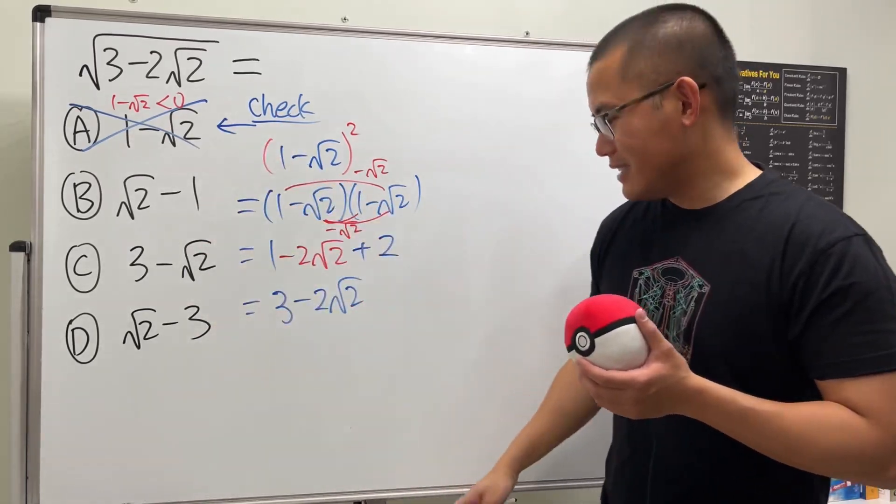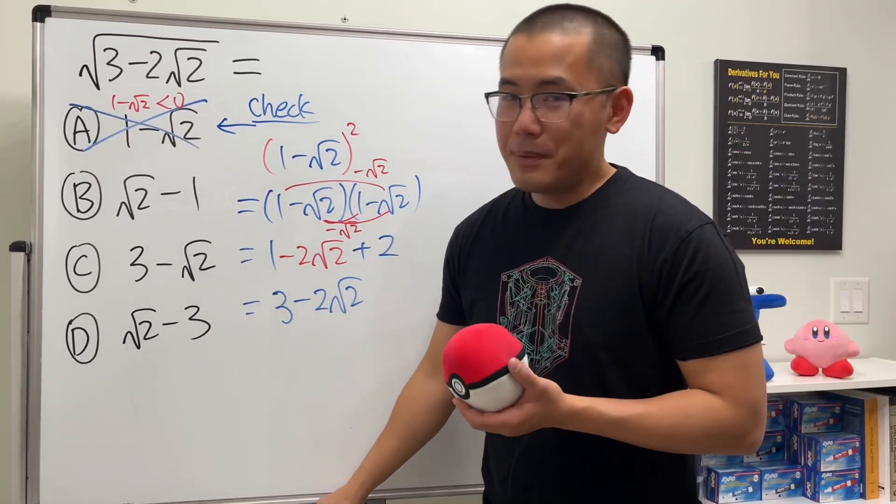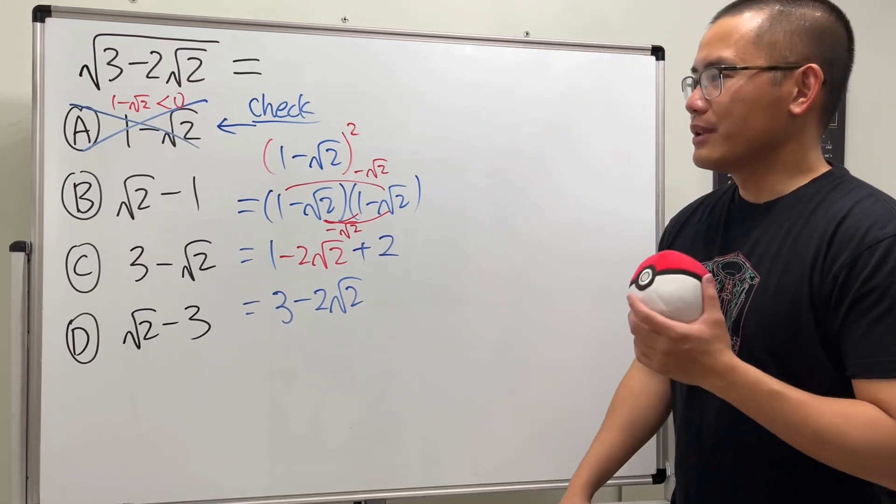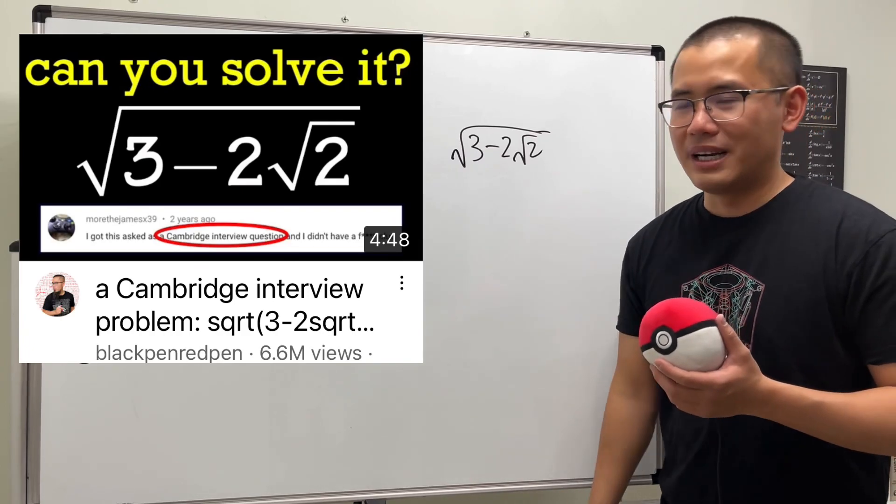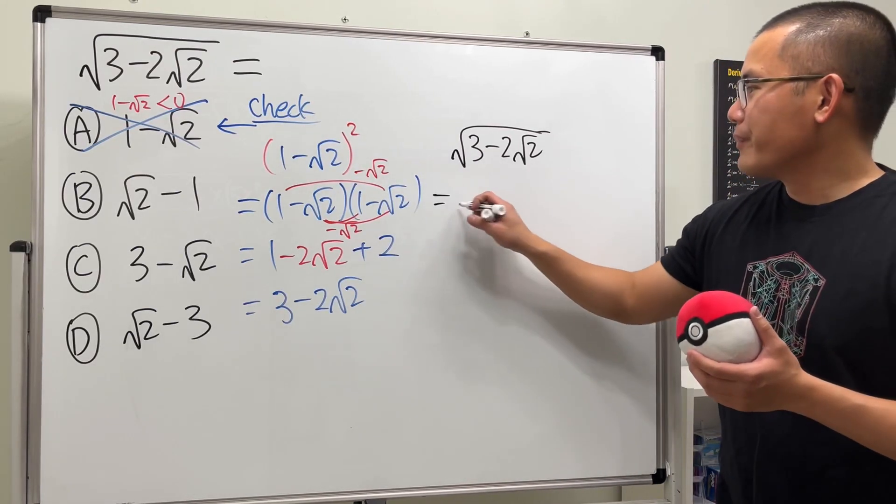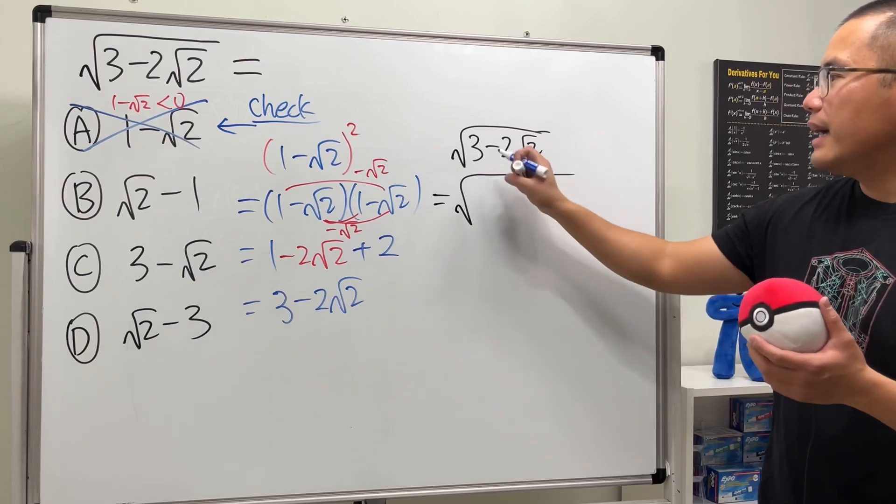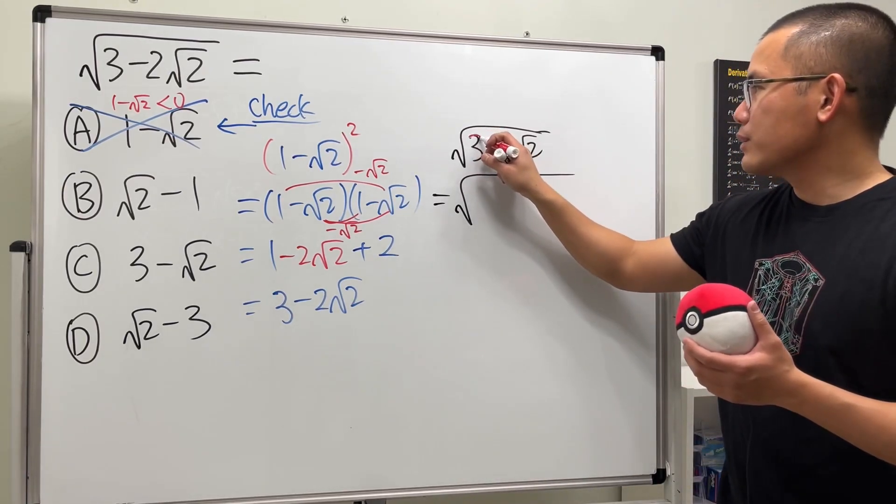I will not recommend you guys to just square the options. Sometimes it might be wrong like this. The way we're going to do it is like how I did it on my main channel. If you want to see the detail version, check out my other video. We look at the square root and we are going to break down this 3.